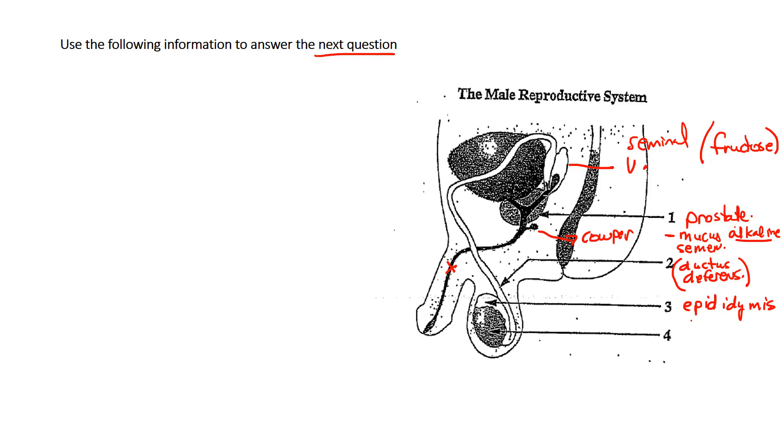This epididymis, we know that this is where the sperm matures. So that's where it's actually going to get its tails, and after that is able to be motile. It can actually move and swim.